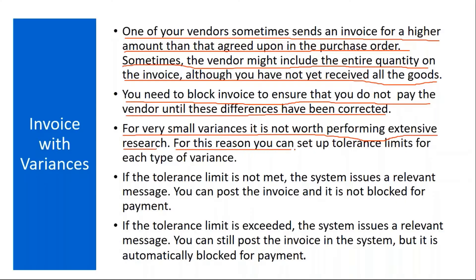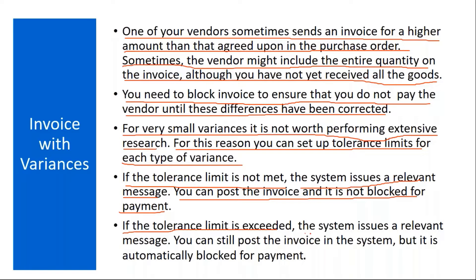For these reasons, you can set up tolerance limits for each type of variance. If the tolerance limit is not met, the system issues a relevant message and you can post the invoice — it is not blocked for payment. If the tolerance limit is exceeded, the system issues a relevant message. You can still post the invoice, but it is automatically blocked for payment.